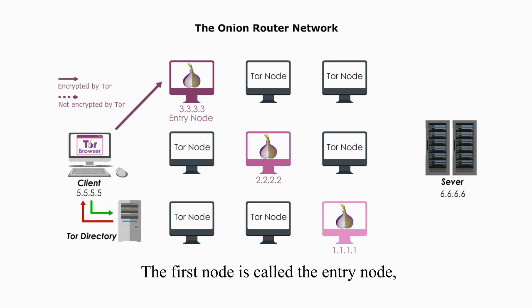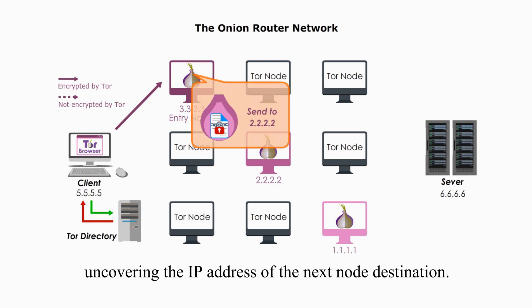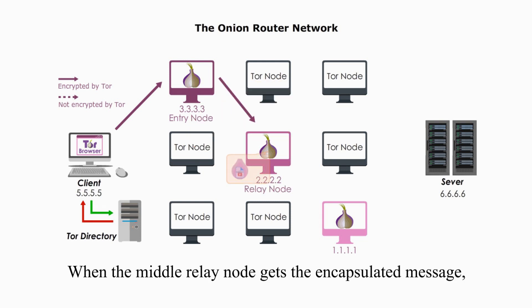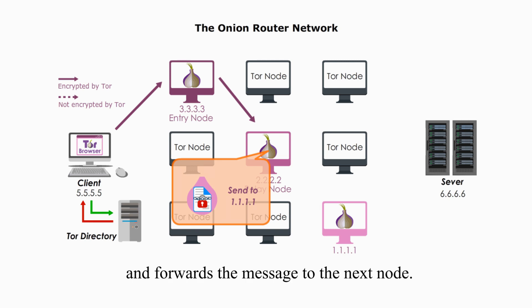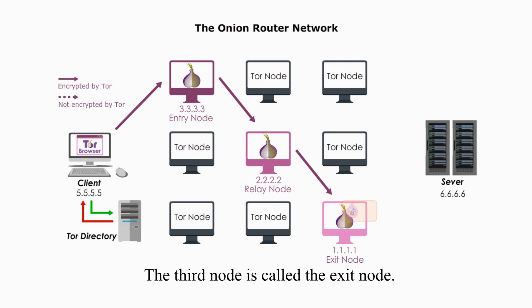The first node is called the entry node, which peels the top layer, uncovering the IP address of the next node's destination. When the middle relay node gets the encapsulated message, it peels the second layer, uncovering the IP address of the next node, and then forwards the message to the next node.